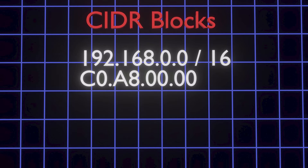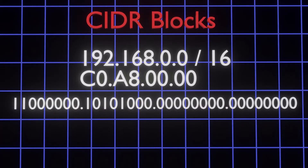So the decimal number 192 is represented as C0, and 168 is represented as A8 in hexadecimal, as you can see here. And this is 192.168.0.0 as a binary number.